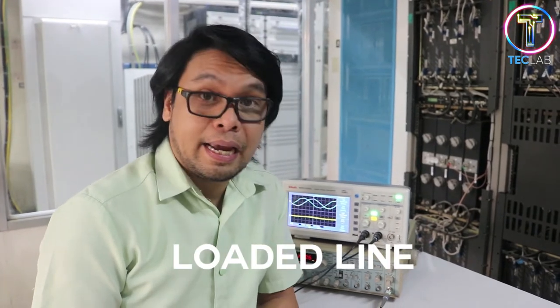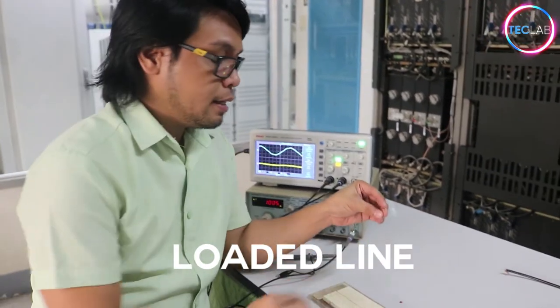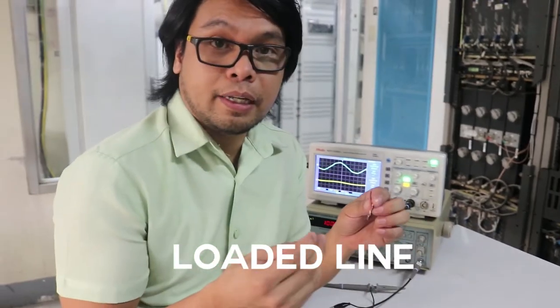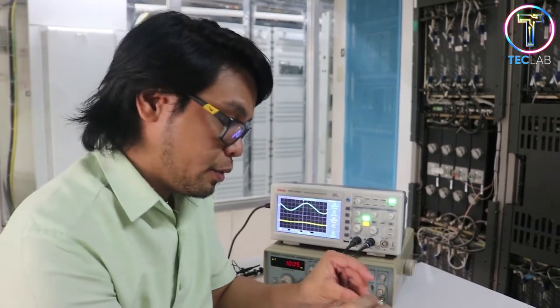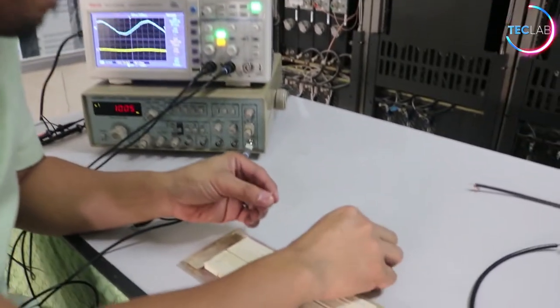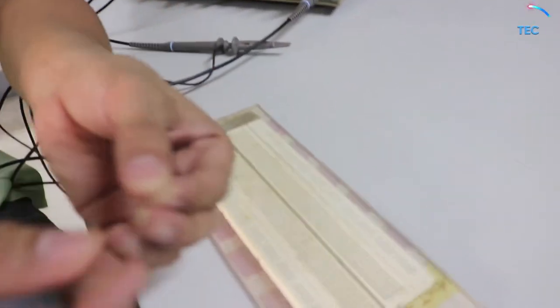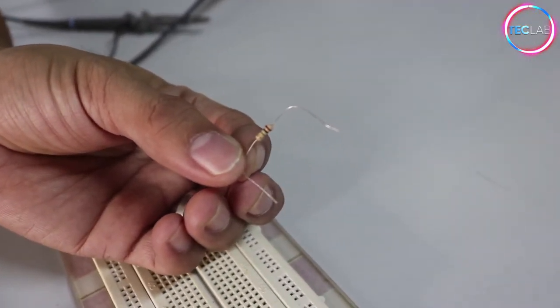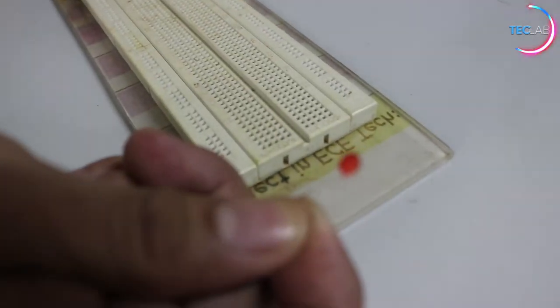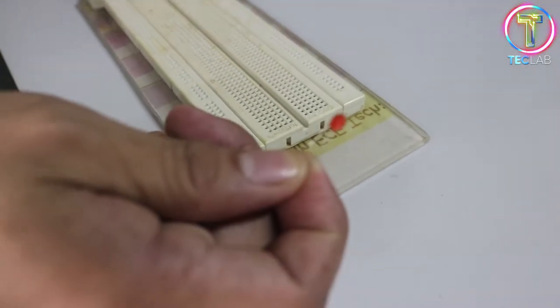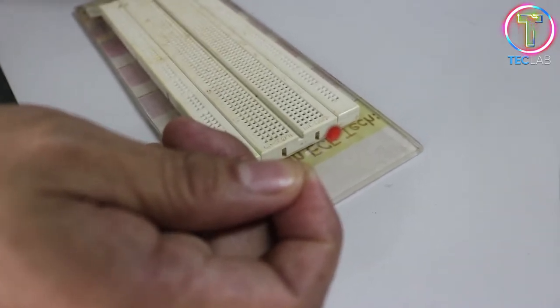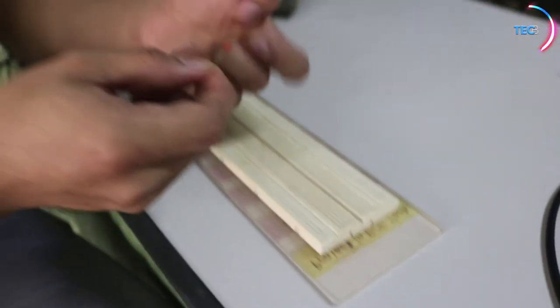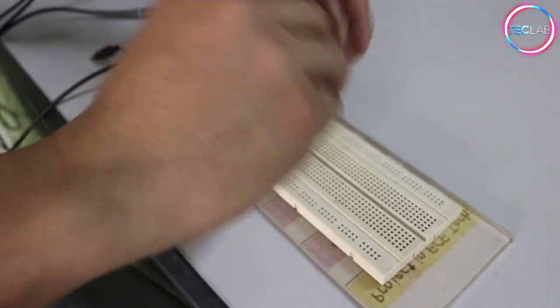For the third part of our laboratory, we're going to do a loaded circuit or loaded line. So we're going to use an RC circuit, which is a resistor and a capacitor. All you need to do is do a series of resistor. By the way, our resistor that we're going to use is a 1 megaohm resistor and a 0.1 microfarad capacitor.